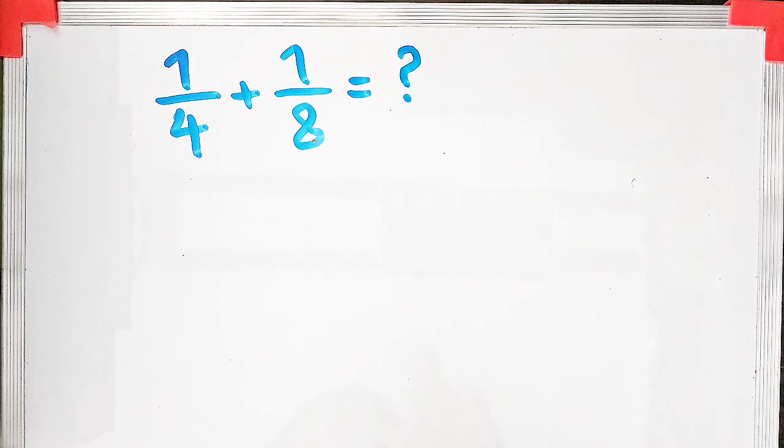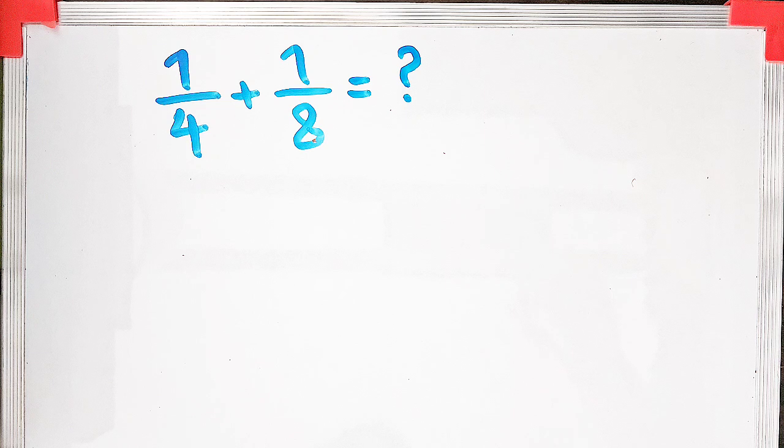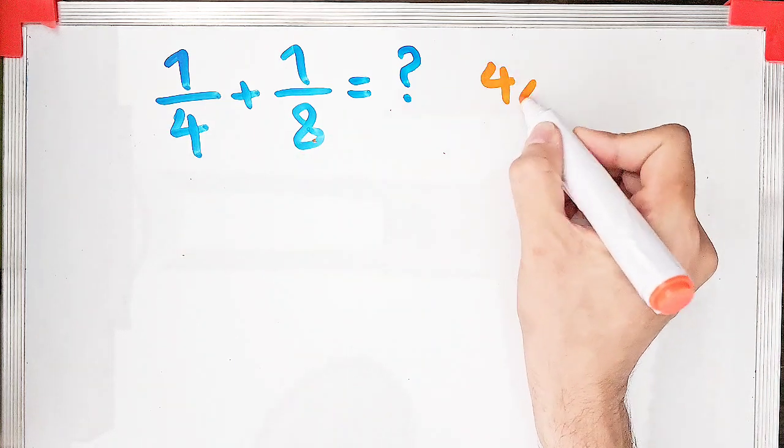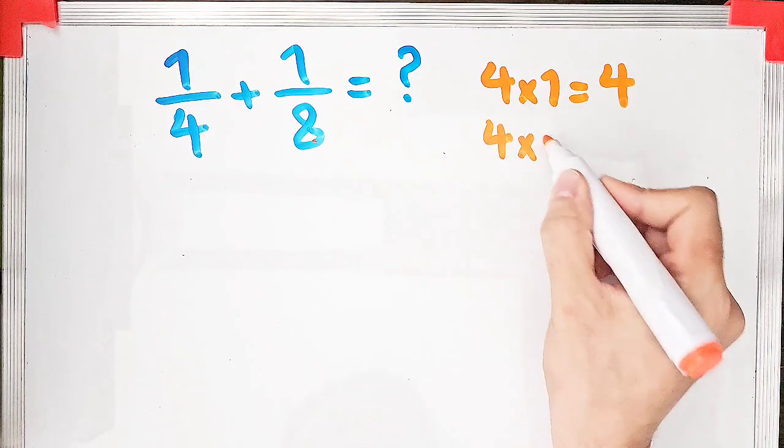Hi guys, can you solve this question? When adding fractions, the first thing you need to do is find a common denominator. The denominators of the fractions are four and eight. To add these fractions, we need a common denominator.